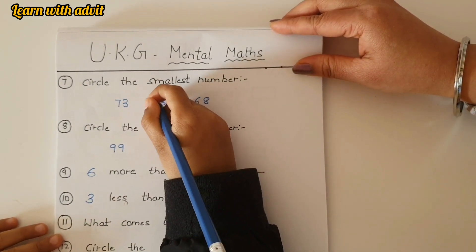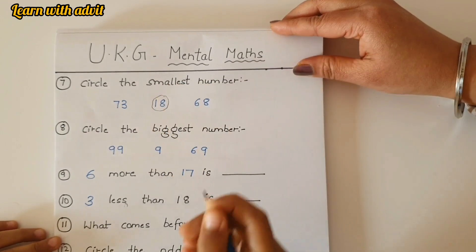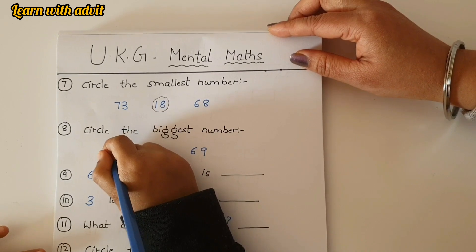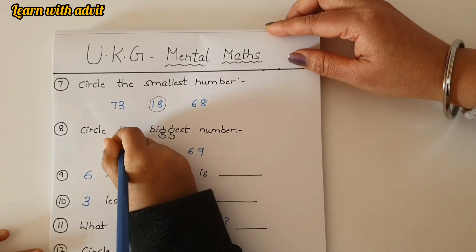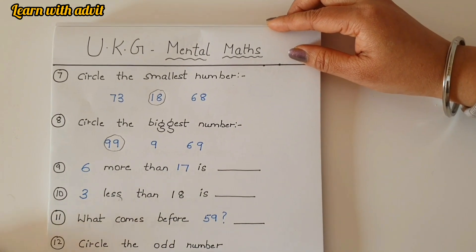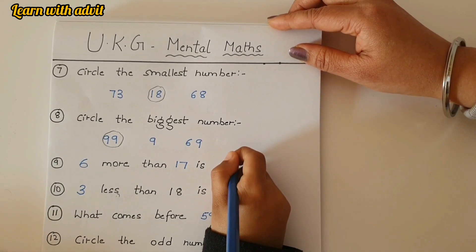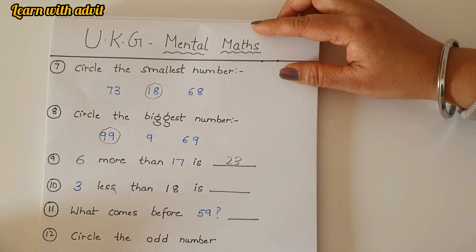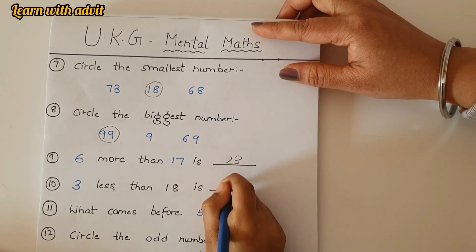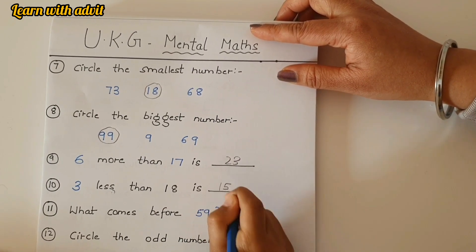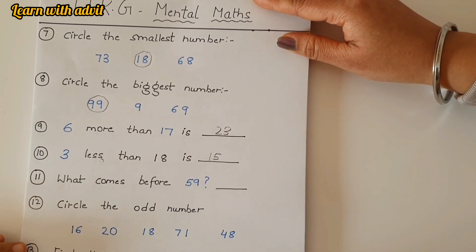Circle the biggest number. 99 very good. Six more than 17 is 23. Yeah. Three less than 18 is 15. 30... oh yeah, you have to do quick but correct. Okay.